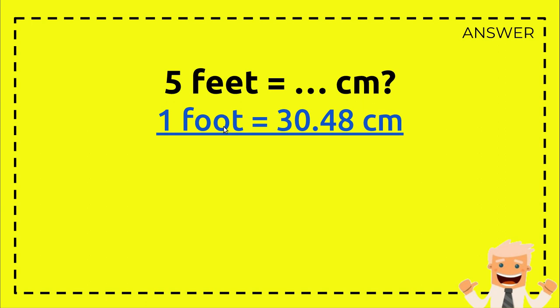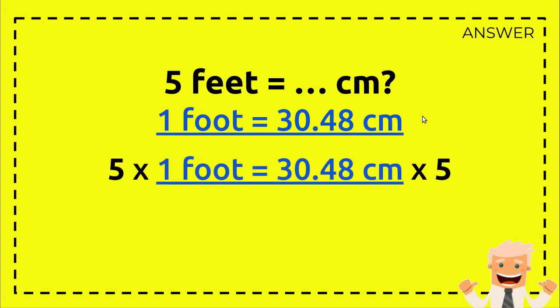This is how you solve the problem. First you need to write down the formula again: one foot equals 30.48 centimeters. And then you multiply 30.48 with 5 and one foot with 5.